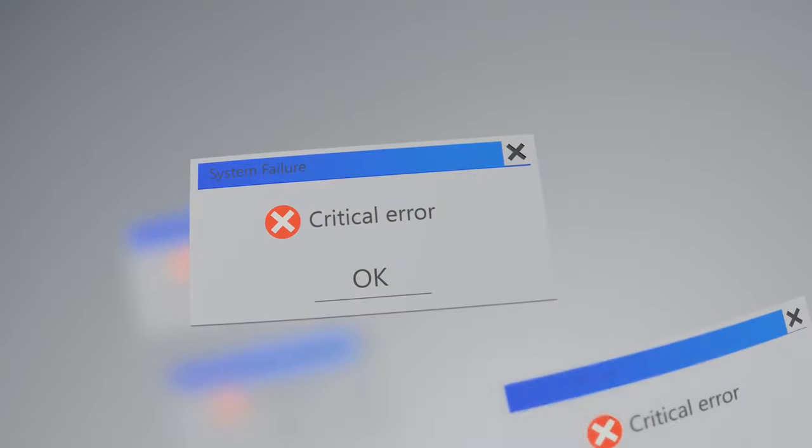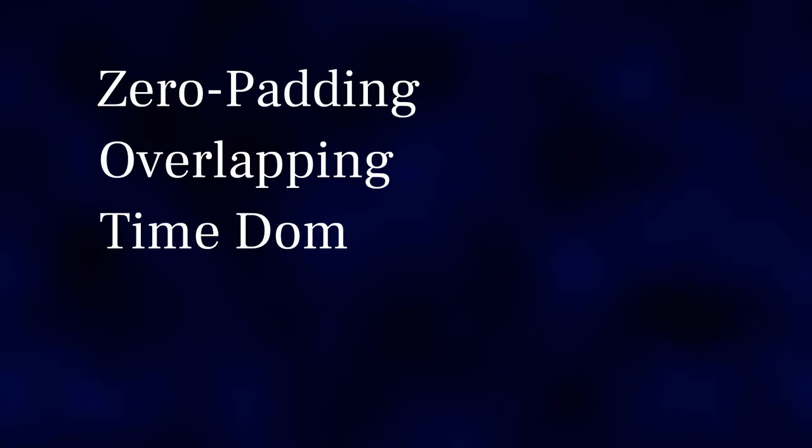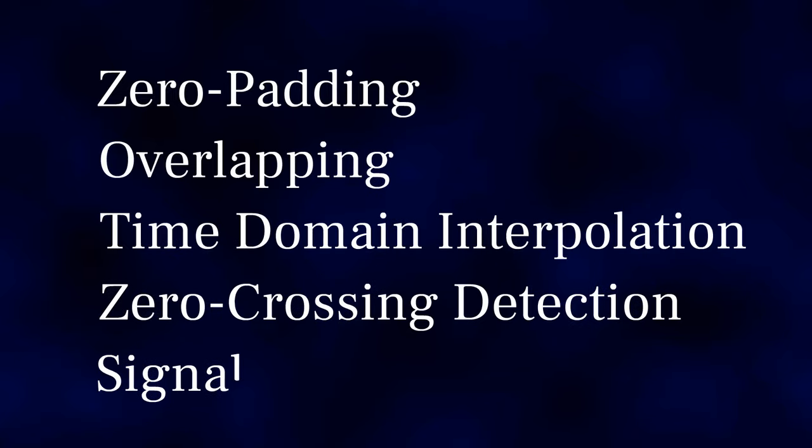What if your signal doesn't contain a number of samples that is a power of 2? This will likely be the case for most signals. So loads of brilliant ideas have been floated over the years to try and mitigate this problem, ranging from displaying an error message and refusing to run, to some pretty ingenious ways of modifying your signal so that it does contain a number of samples that is a power of 2.